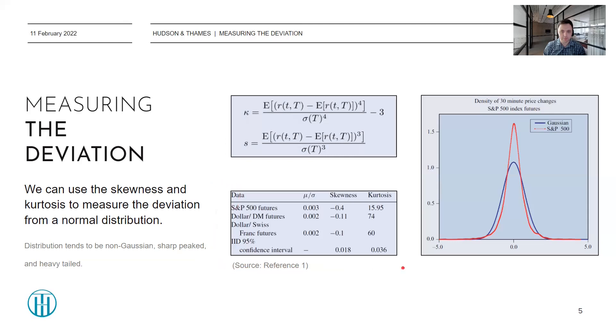In this table from Rama's paper, he gives some explicit numerical values for the S&P 500 futures, dollar DM futures, and dollar Swiss franc futures. The kurtosis for a normal distribution with this formula is zero. You can see from the values that Rama has computed here that numerically they differ by quite a large margin from the normal distribution.